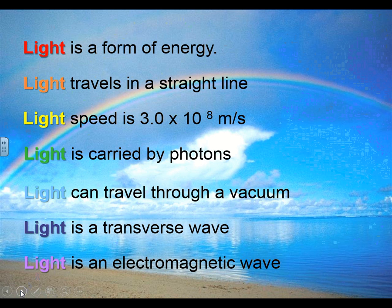Photons carry light. Notice I put the word 'light' in the order of the visible spectrum — that's the only part of the electromagnetic spectrum that we can see. It always goes in the order of ROYGBIV: red, orange, yellow, green, blue, indigo, and violet.